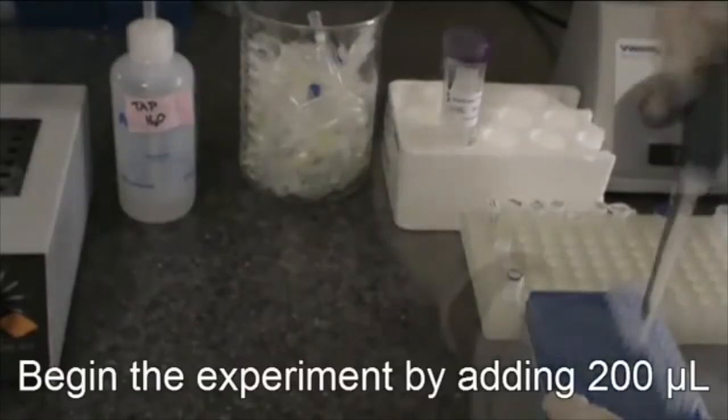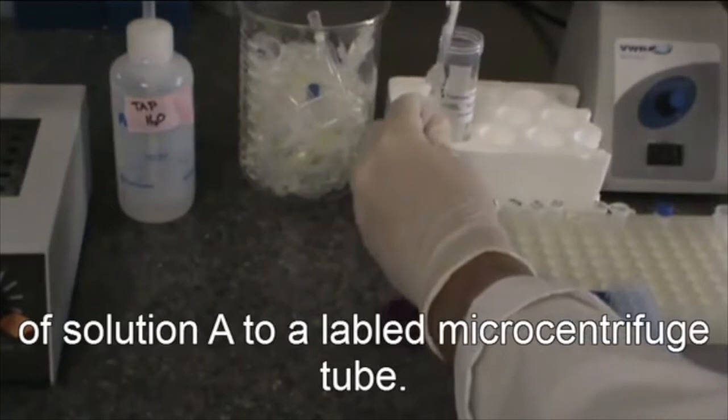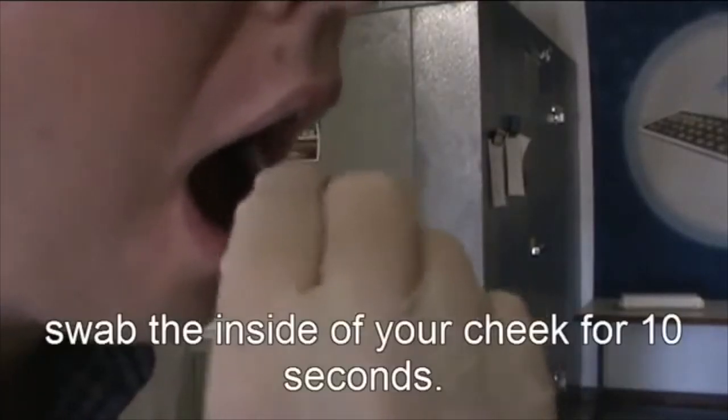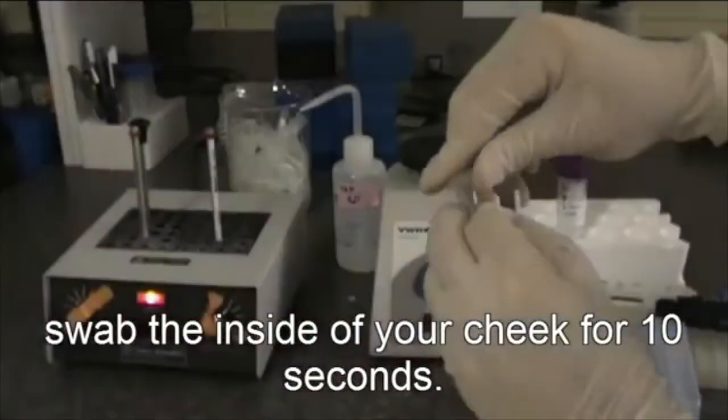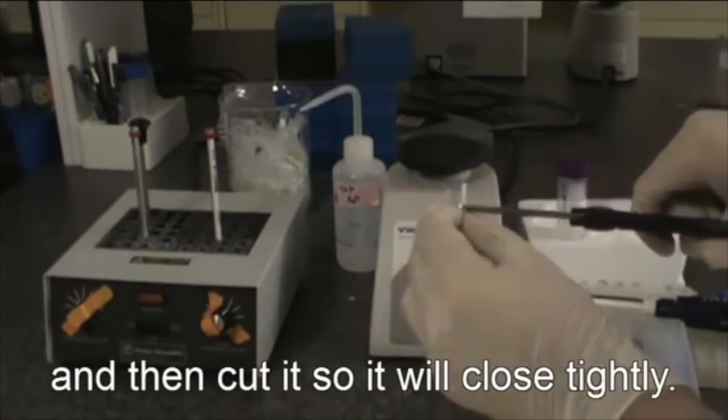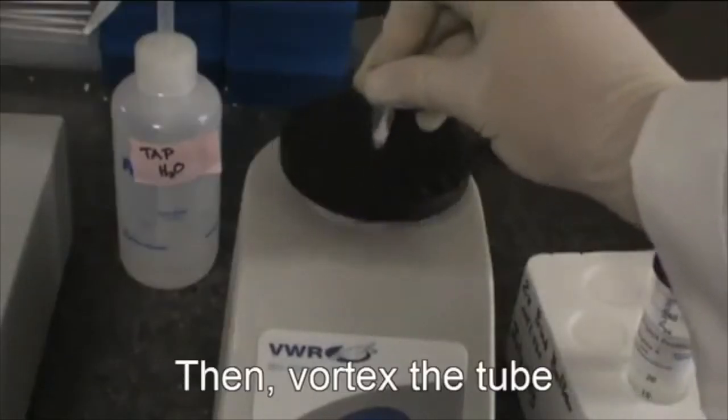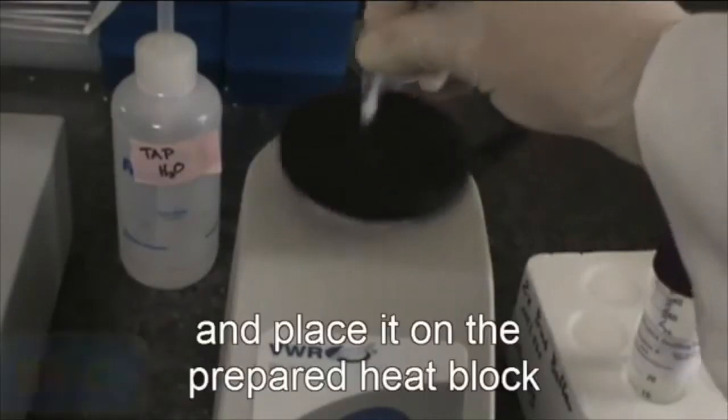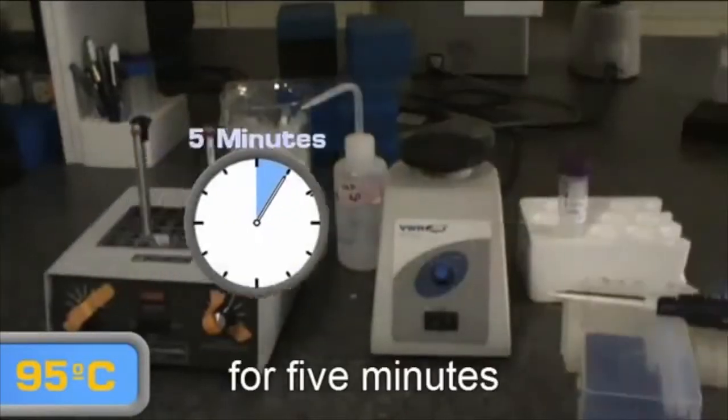Begin the experiment by adding 200 microliters of solution A to a labeled microcentrifuge tube. Then using the provided cotton swab, swab the inside of your cheek for 10 seconds. Place the cotton swab inside the tube and then cut it so it will close tightly. Then vortex the tube and place it on a prepared heat block for 5 minutes.